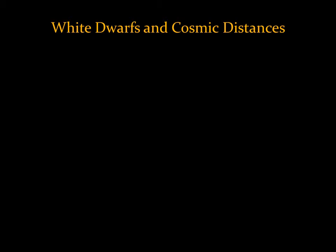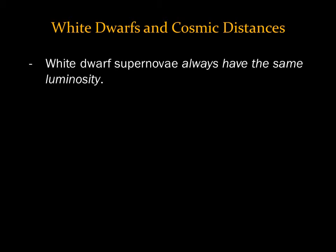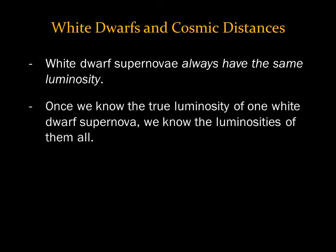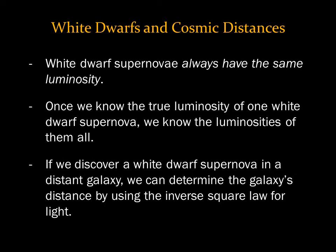One more thing about white dwarf supernovae: the process is the same for all of them. A white dwarf in a binary system exceeds 1.4 solar masses and explodes — it's the same physics every time, so white dwarf supernovae always have the same luminosity. Therefore, once we know the true luminosity of one white dwarf supernova, we know the luminosities of them all. Whenever we discover a white dwarf supernova in a distant galaxy, we can determine the galaxy's distance using the inverse square law for light. We'll talk more about how white dwarfs have helped us establish cosmic distances soon.